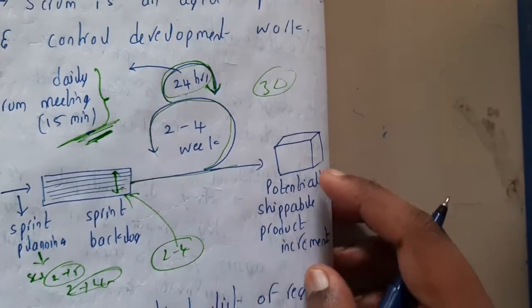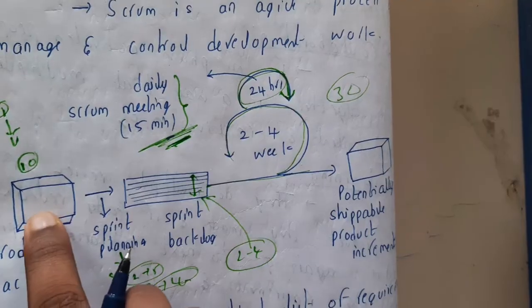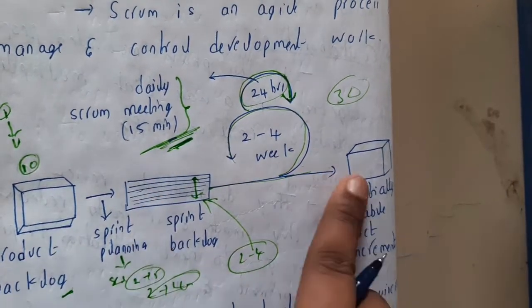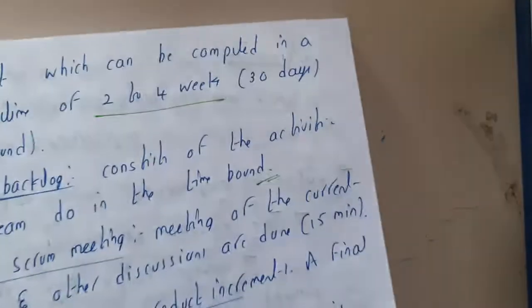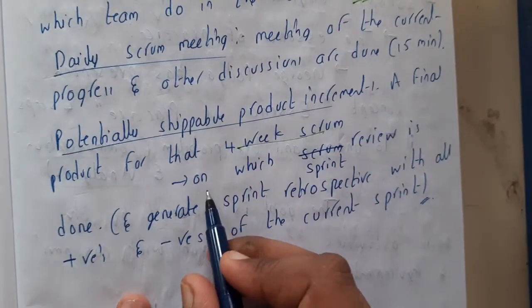Again, this is collected and with the next 2 to 4 weeks, they will be continuing some more things. They will be doing the process and at the end they will be combining all the products. A final product for that 4 weeks of scrum is generated on which sprint reviews will be done.